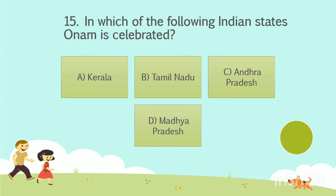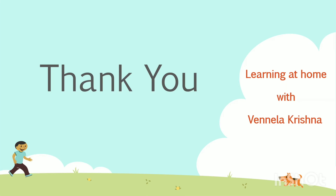Question number 15. In which of the following Indian states is Onam celebrated? Option A: Kerala. Option B: Tamil Nadu. Option C: Andhra Pradesh. Option D: Madhya Pradesh. Your time starts now. The answer is Option A, Kerala. Please subscribe to my channel and press the bell icon for new videos. Thank you for watching.